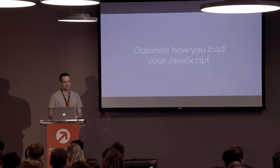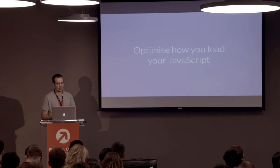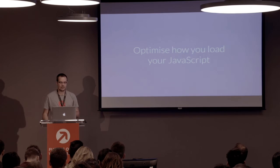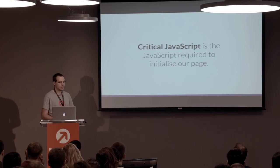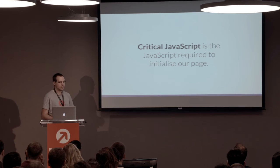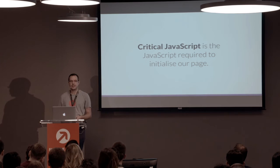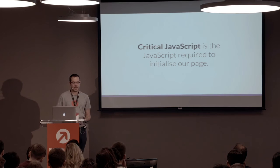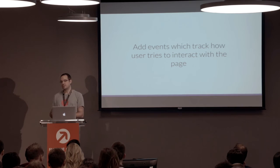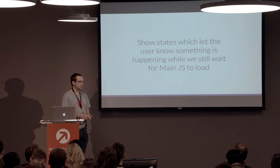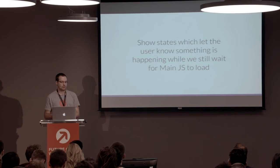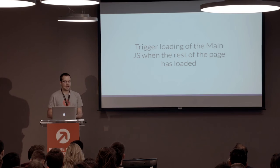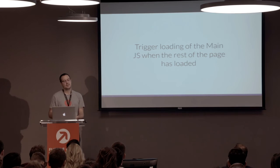The average size of JavaScript included in a page has increased from 180 kilobytes to 299 kilobytes in the past few years, making it the second largest file size after images. It therefore makes sense to optimize how we load our JavaScript. We can separate our JavaScript into two distinct types: critical JavaScript and main JavaScript. Critical JavaScript is what's required to initialize our page — the aim is to give users the perception that they can start interacting as soon as possible, improving perceived performance. As a first priority, we add events which track how users try to interact with the page so we can handle those events later. We then show states so if a user clicks a button, we can show a state letting them know something is happening while we wait for the main JavaScript to load. Once the rest of the page is loaded, our critical JavaScript will trigger the main JavaScript to be downloaded.